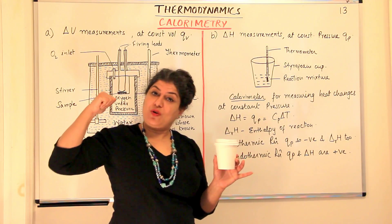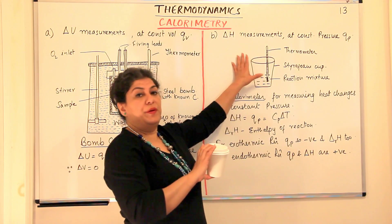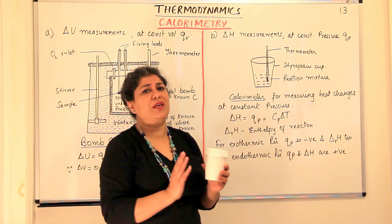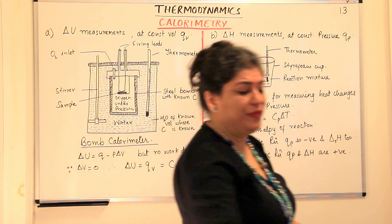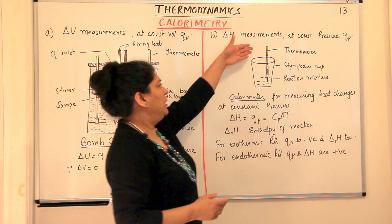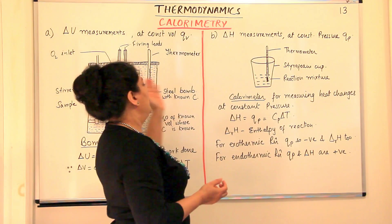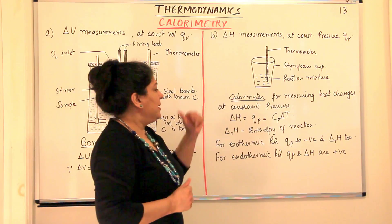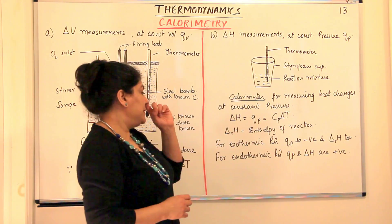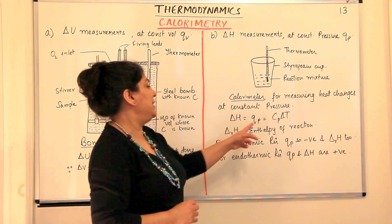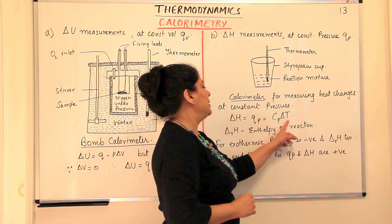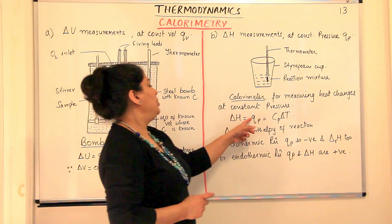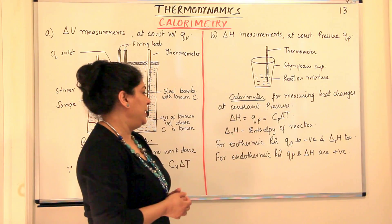For constant volume we needed the bomb calorimeter, but for measurement at constant pressure, a styrofoam cup suffices. Styrofoam is used because it does not conduct heat much, minimizing energy loss. Since the thermometer is inside the reaction mixture, heat is recorded before it escapes. Delta H = QP = CP·delta T. Using this formula and knowing the heat capacity of the styrofoam cup, we can calculate the heat exchange that actually took place.